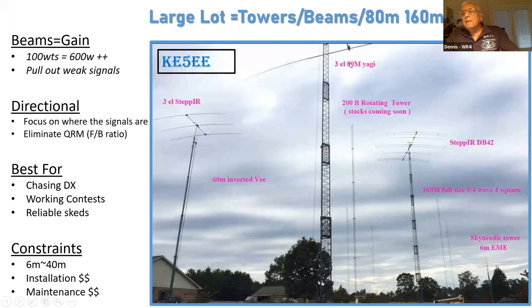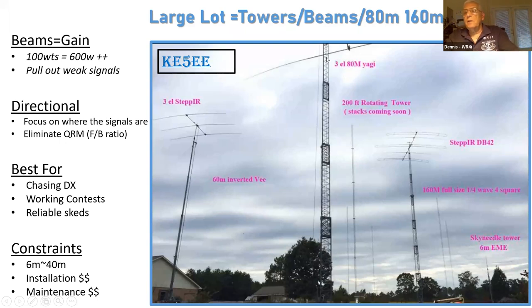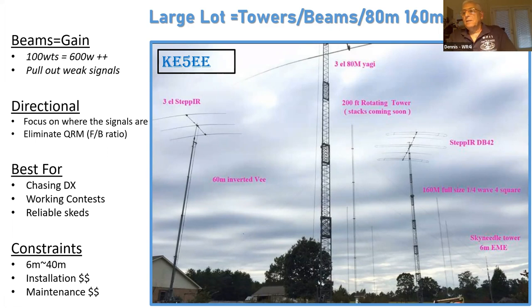On this picture you can see this guy has a three-element — station KE5EE, which is a super station. He's got a three-element 80-meter Yagi, which is huge. He's also got a SteppIR antenna, a 60-meter inverted V, a rotating tower, and 160-meter towers on the side. He's got lots of property, lots of money obviously — he has 10 towers and has put over a million dollars into his antennas. The installation is expensive and the maintenance of these things is also expensive. That's the best of the best. You can go to his website — he has a great website with lots of good information about his installation.